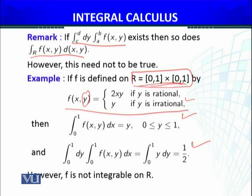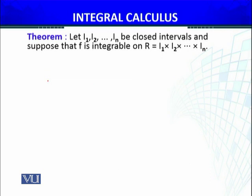But f is not integrable on that region R. So this serves as a counter example that if the iterated integral exists, it doesn't mean the function of two variables over the certain region R is also integrable. Let's generalize the iterated integral results to functions of n variables. Let i1, i2, and so on up to in be the closed intervals, and suppose that f is integrable on that region R.